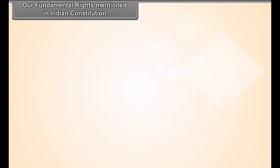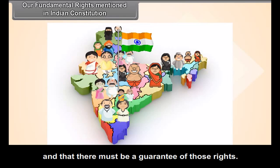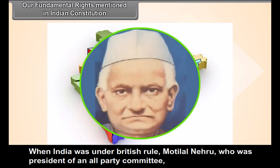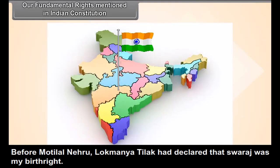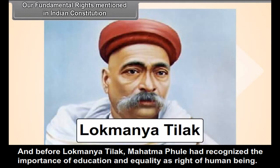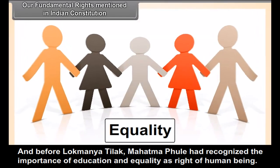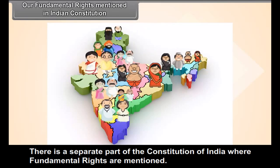Our fundamental rights mentioned in the Indian Constitution. Even before India became independent, our leaders were aware that a future India must respect rights of citizens and that there must be a guarantee of those rights. When India was under British rule, Motilal Nehru, who was president of an all-party committee, demanded that the government must adopt a Bill of Rights in 1928. Before Motilal Nehru, Lokmanya Tilak had declared that Swaraj was his birthright. And before Lokmanya Tilak, Mahatma Phule had recognized the importance of education and equality as rights of human beings. These ideas form the origin of rights today in free India. There is a separate part of the Constitution of India where fundamental rights are mentioned.